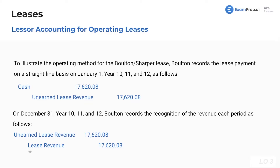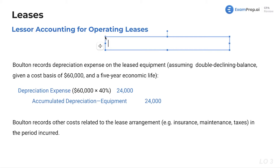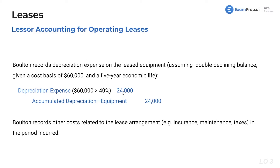These are nice, simple journal entries that should make relative sense. Here's our depreciation expense — double declining balance, as given. This is straight math from our depreciation section. Generally, we start with straight line: it's a five-year useful life, so one divided by five means one year of depreciation is 20%. We multiply that by two, giving us 40%. So we apply 40% each year. With a cost basis of $60,000, that gives us $24,000 of depreciation expense accumulated in this year.